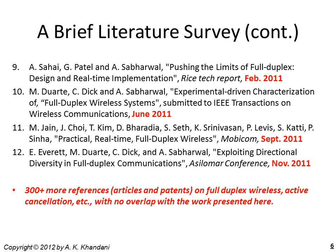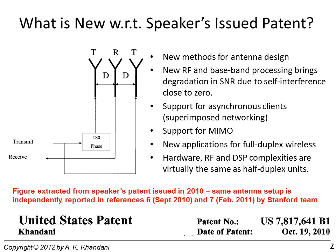Here is a summary of what is new relative to my 2010 patent, which used two transmit antennas with 180-degree phase shift and the receive antenna in the middle. New antenna structures are presented, and by using multiple stages of cancellation, potential degradation in SNR due to self-interference is virtually zero. Methods to support asynchronous clients and MIMO are introduced, along with several new applications of full-duplex wireless. Overall, hardware and signal processing complexities are very close to those of a half-duplex unit.